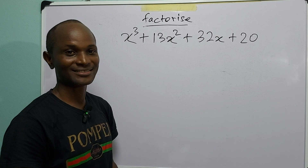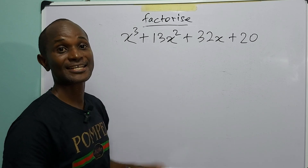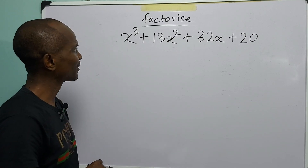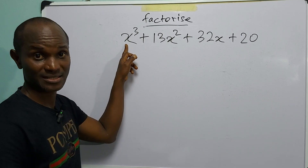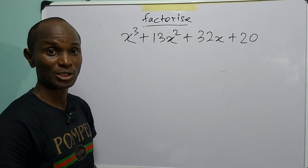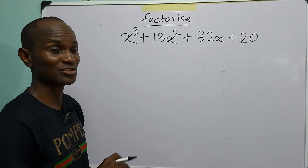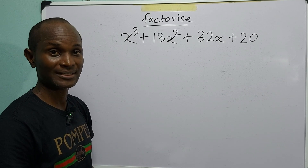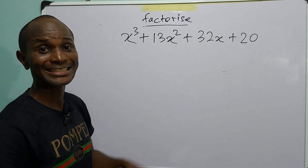Hello and welcome to today's exercise. The task of the day is to factorize the expression given on the board. We can see that the highest power of x in this polynomial is 3, so we cannot use the normal methods of factorization that we use for quadratic expressions, where the highest power of x is 2.